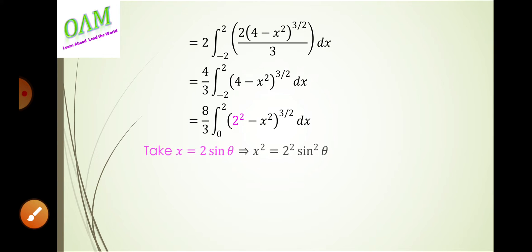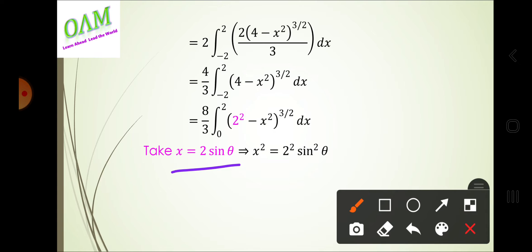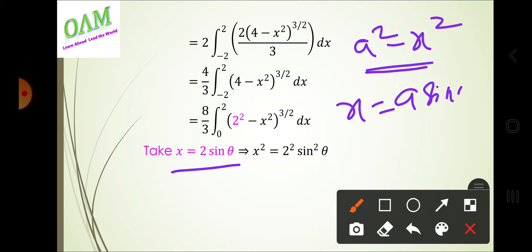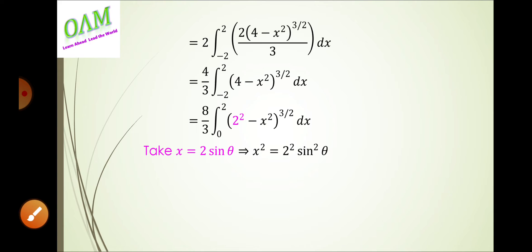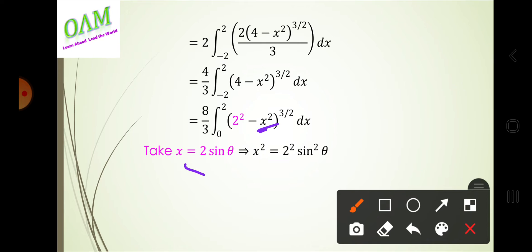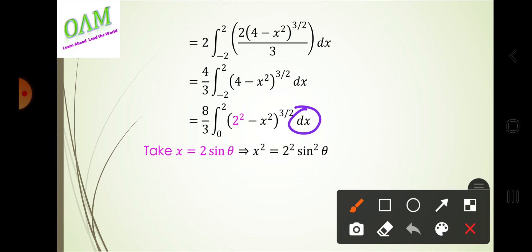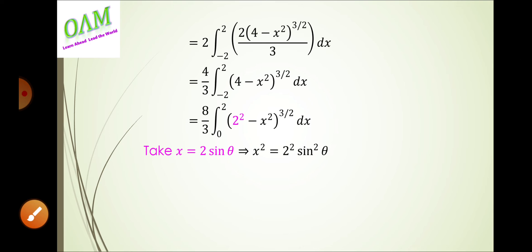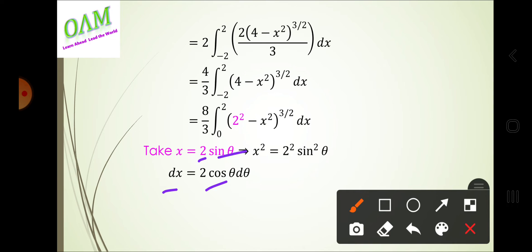Using trigonometric substitution: x = 2sinθ. When the form a² - x² appears in integration, the standard substitution is x = a sinθ. Here x = 2sinθ, so differentiating gives dx = 2cosθ dθ.